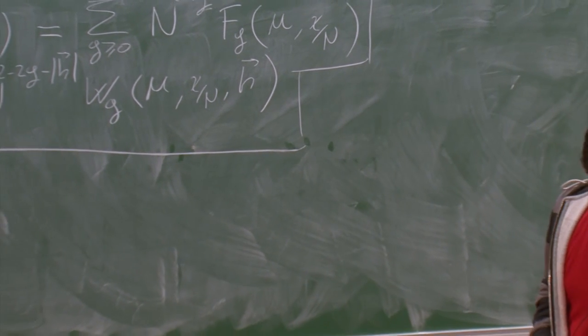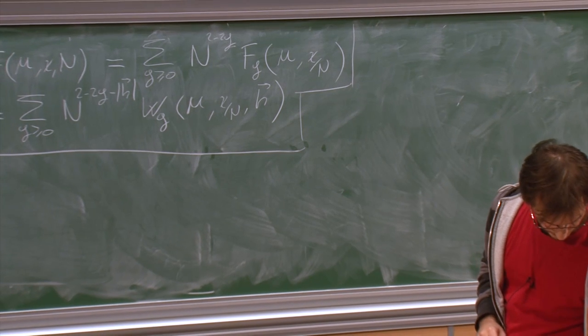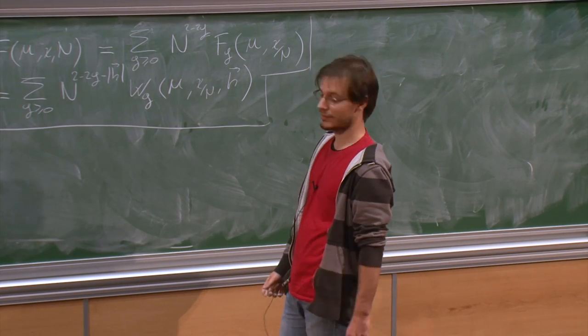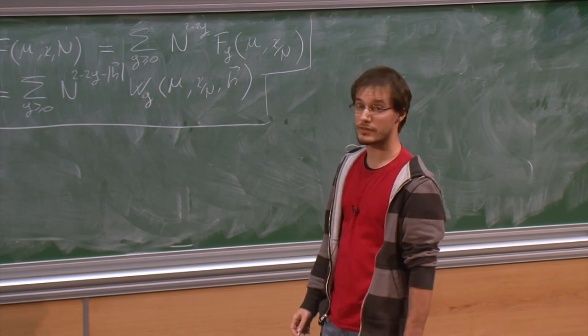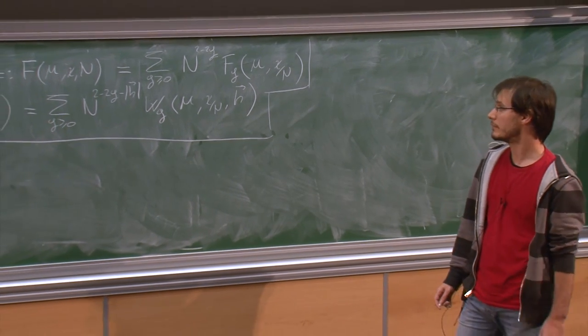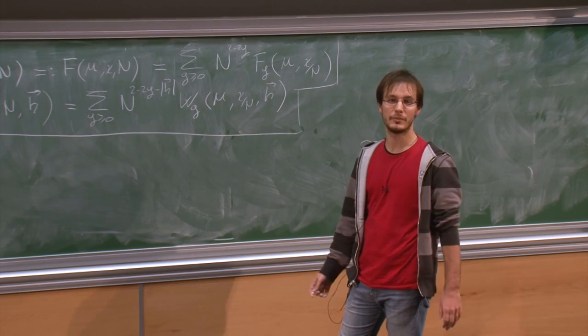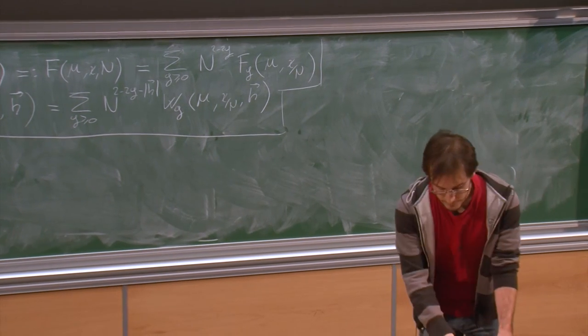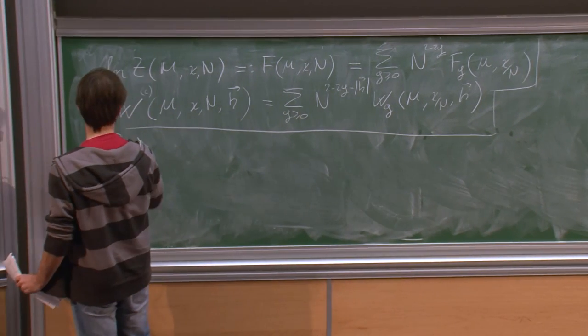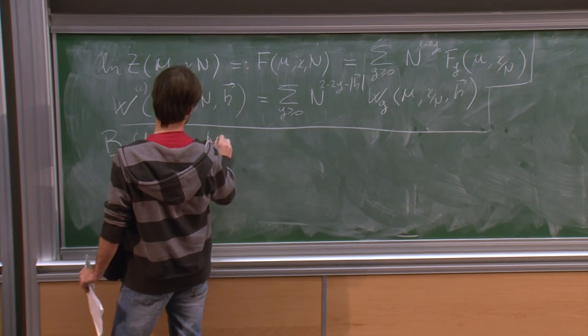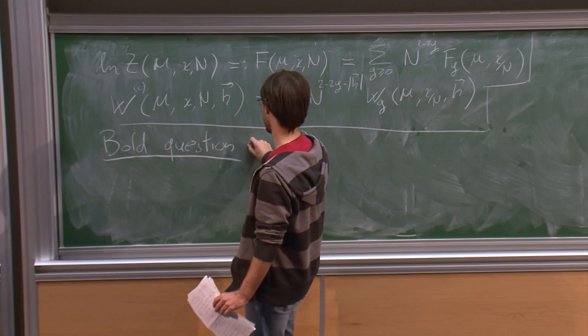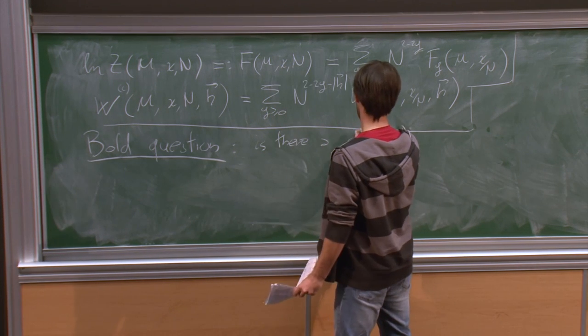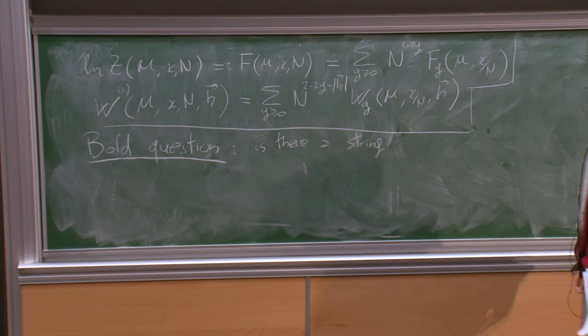But a second type of perturbation theory, which was alluded to earlier this morning by Bertrand, is to consider, instead of the limit of large kappa, you can consider the limit of large kappa and n, in this case you stick with U(n), and you keep kappa over n, the ratio of kappa over n fixed.